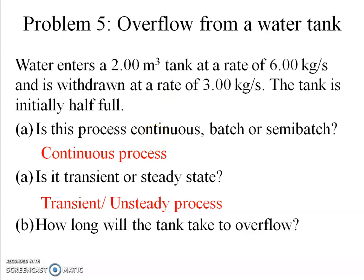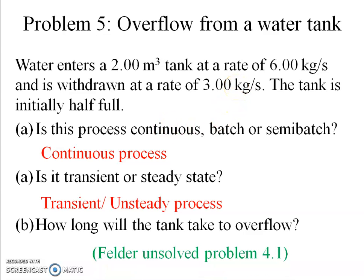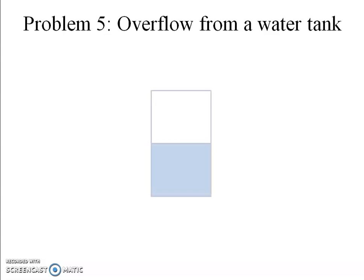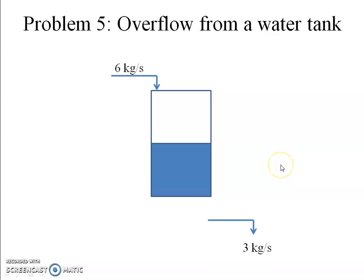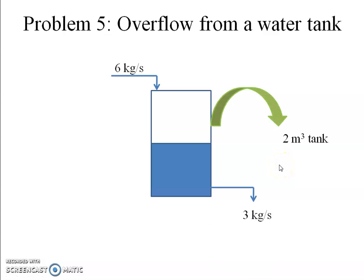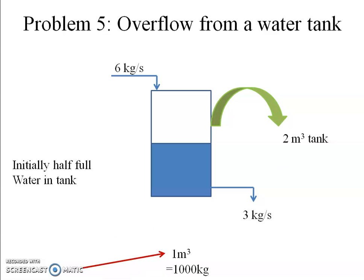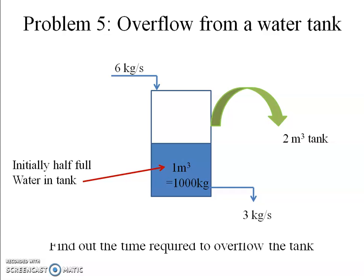The question asks how long it will take for the tank to overflow. This problem is from the book Felder, unsolved problem 4.1. I have made a flowchart: the tank receives 6 kg/s at the inlet and discharges 3 kg/s at the outlet. The tank capacity is 2 m³; initially it is half full, so there is 1 m³ of water, which is 1000 kg.